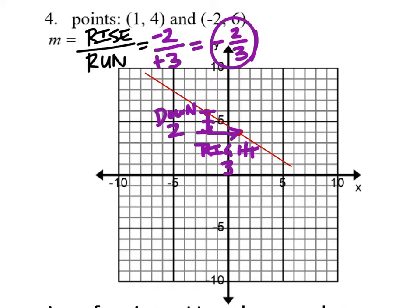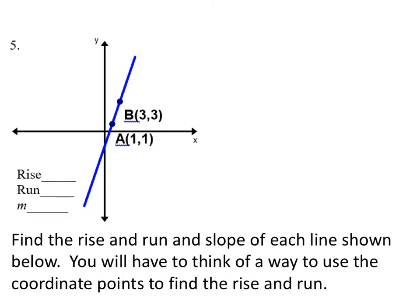If you drew the triangle the other direction, you'd go up two but then to the left three, so that becomes positive two over negative three. It still has the same value with just one negative. We can show it with the rise negative in the numerator, or with the negative in the run in the denominator — either way it's the same slope.